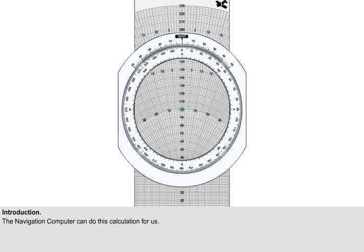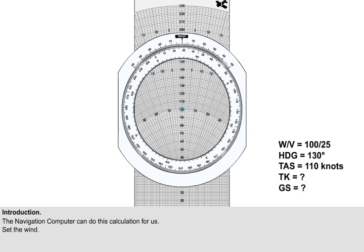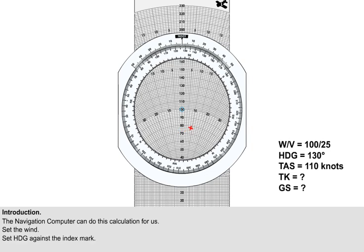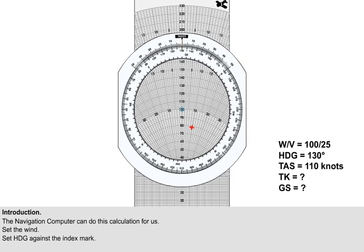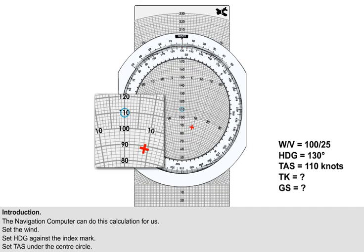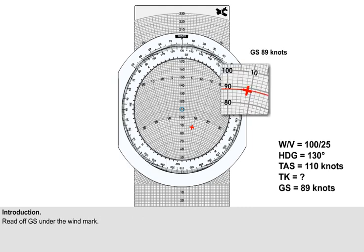The navigation computer can do this calculation for us. Set the wind. Set the heading against the index mark. Set the true airspeed under the center circle. Read off the ground speed under the wind mark. Read off the drift to give the resulting track.